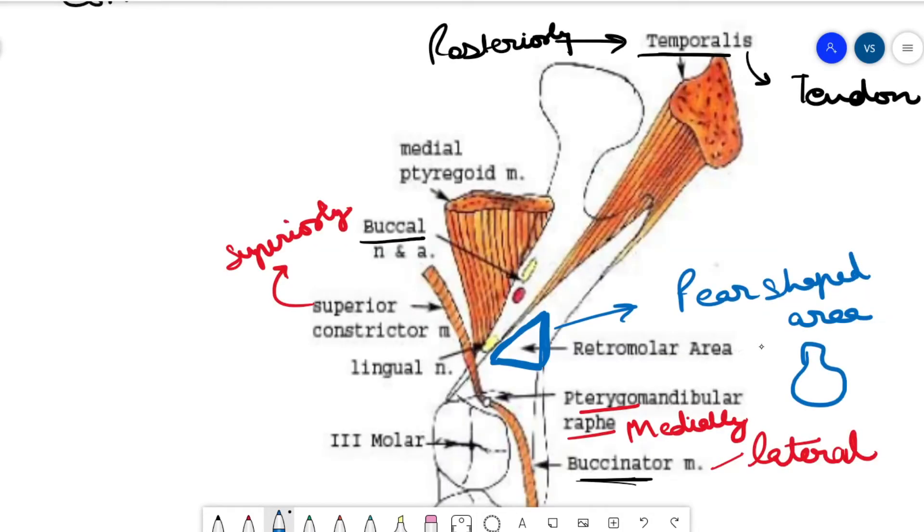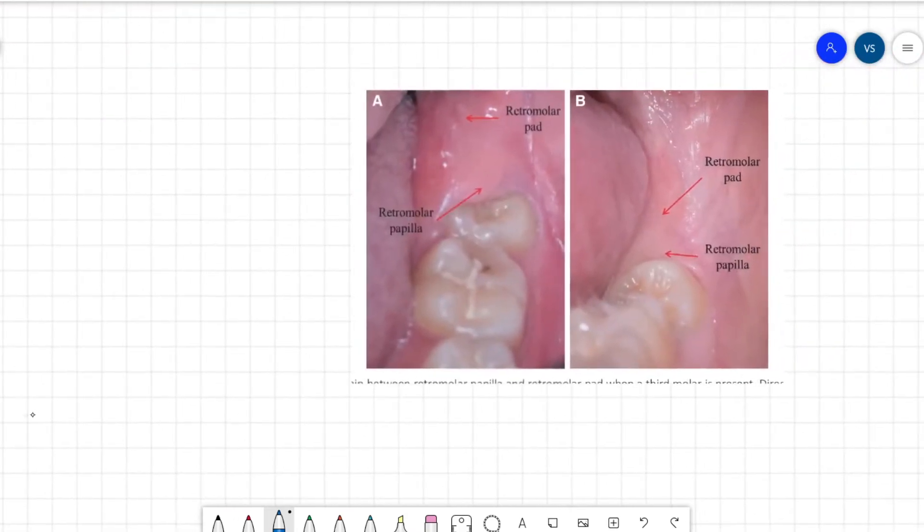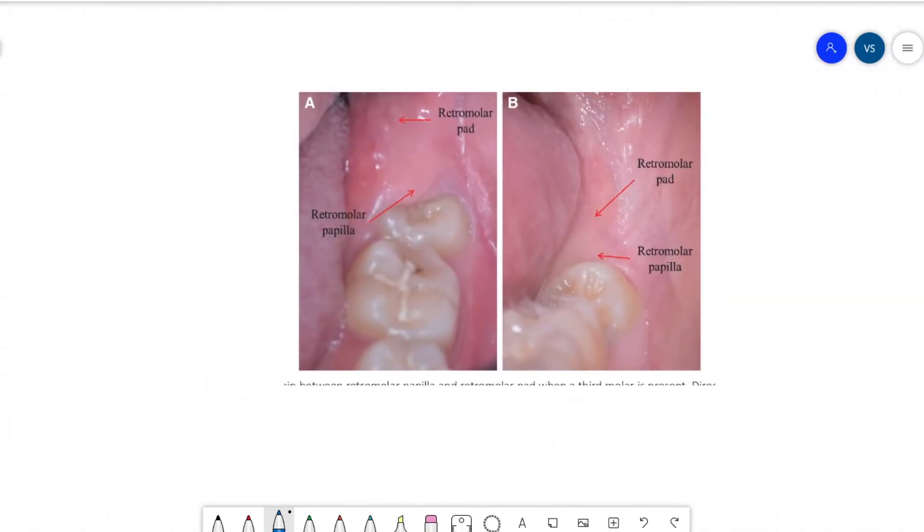Anterior to this is the retromolar papilla. It's anterior to the retromolar pad and a pear-shaped structure, and it contains dense fibrous connective tissue.